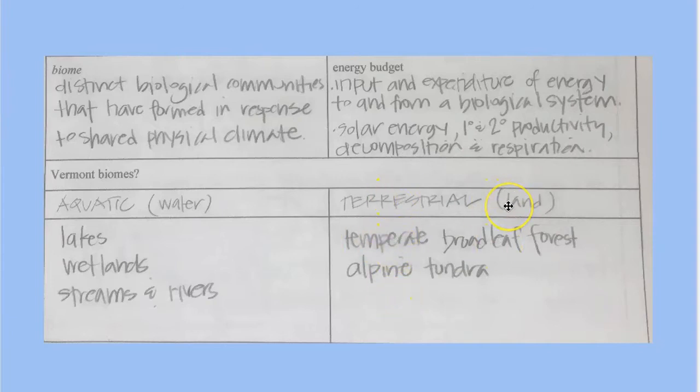And then we also have alpine tundra because we have the altitude of some of the higher green mountains. In any case, that's one way of classifying an environment that a population lives in.